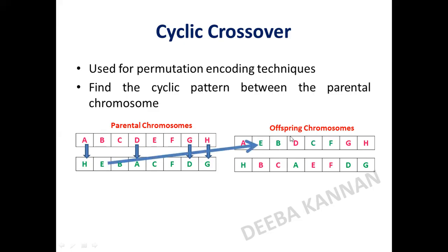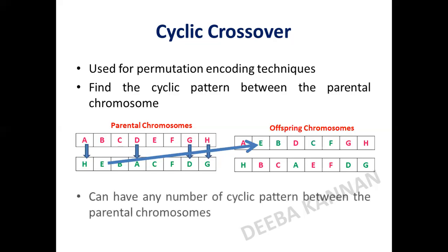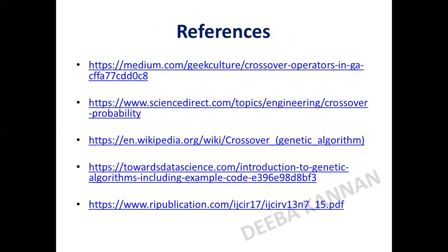For the second offspring, we freeze the positions where the cyclic pattern occurs and fill the remaining positions with genes from parent one. This is how both offspring chromosomes are formed in cyclic crossover. Based on the number of cycles, different types of offspring can be generated. Importantly, even after applying all cyclic patterns, no gene is repeated in the offspring — that is the key criterion for permutation encoded strings.